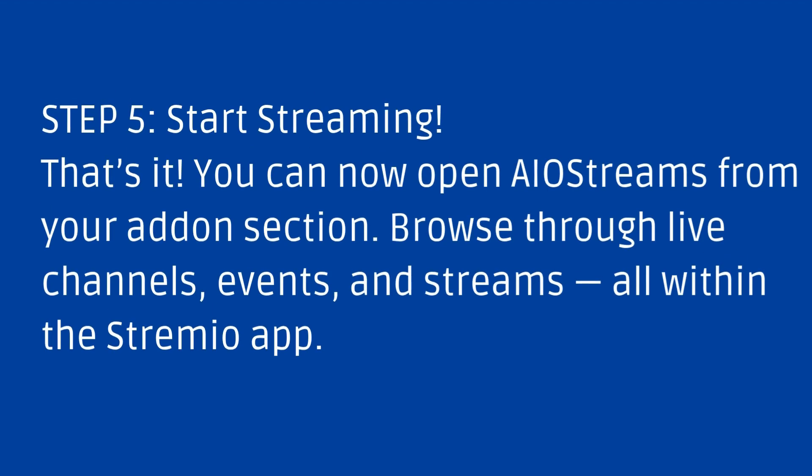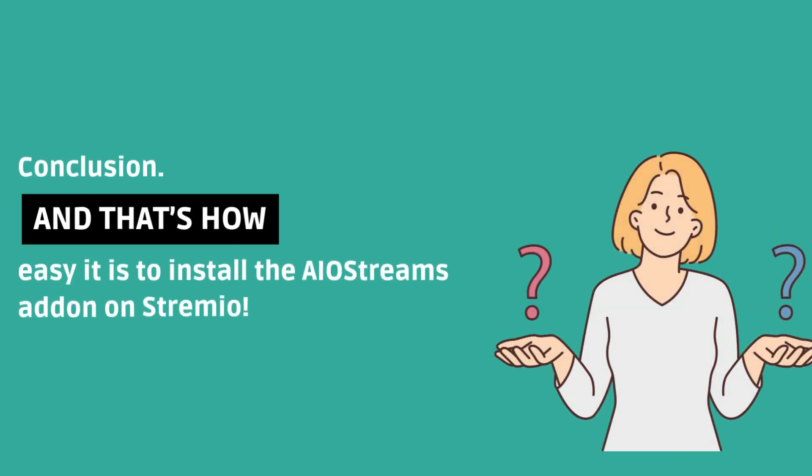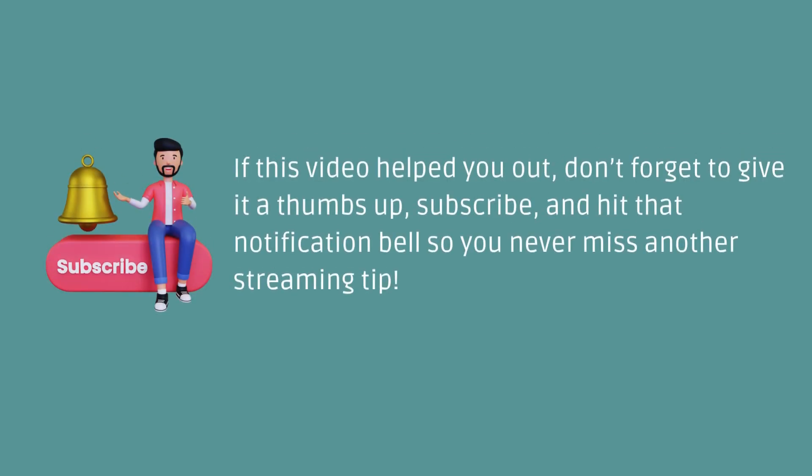Step 5: Start streaming. That's it! You can now open Aostreams from your add-on section. Browse through live channels, events, and streams all within the Stremio app. And that's how easy it is to install the Aostreams add-on on Stremio. If this video helped you out, don't forget to give it a thumbs up, subscribe, and hit that notification bell so you never miss another streaming video.